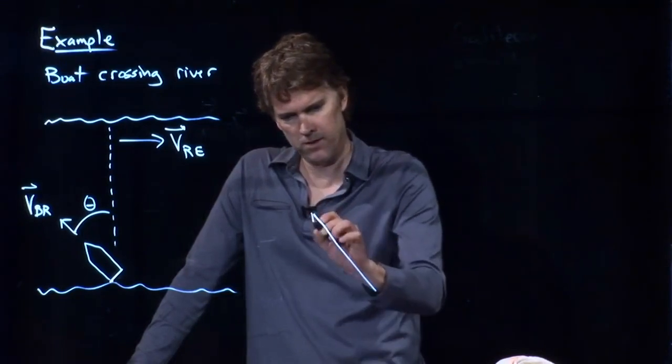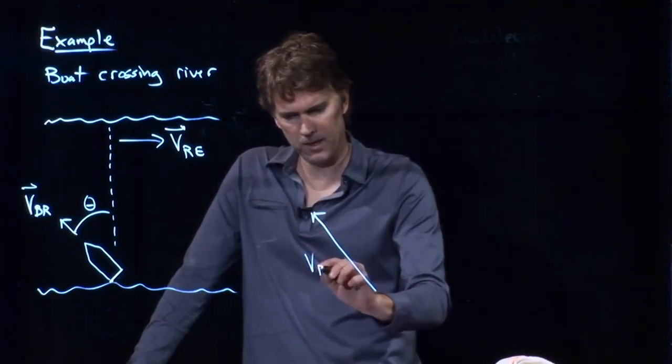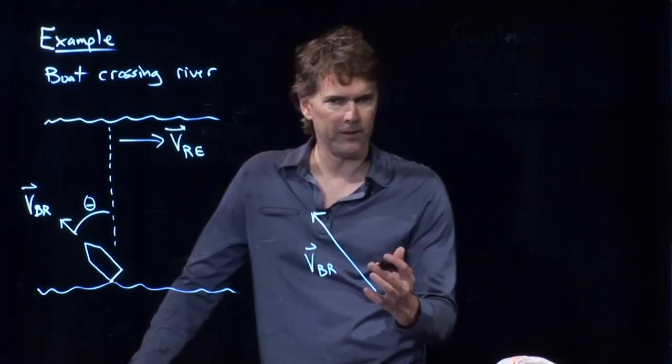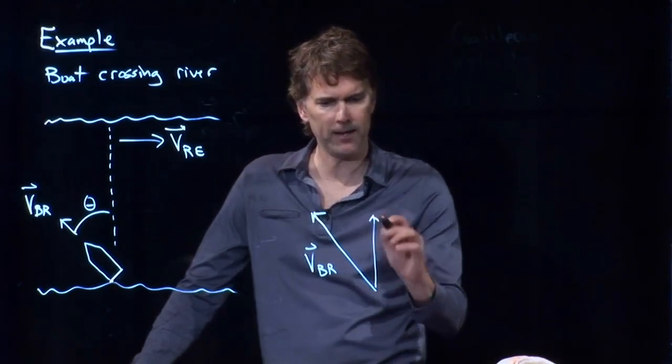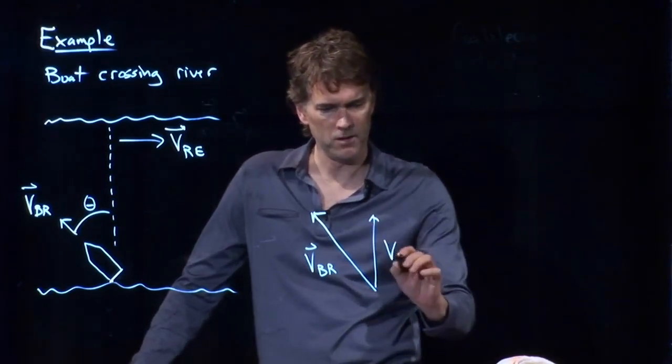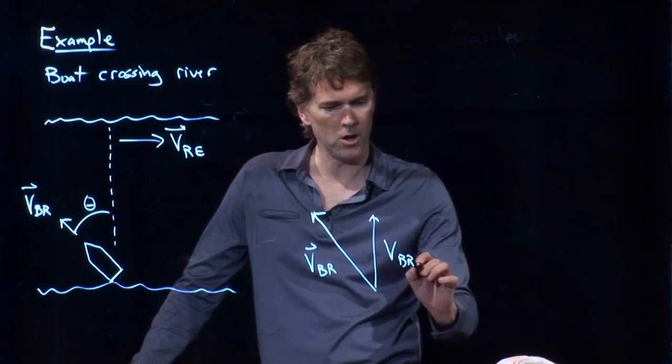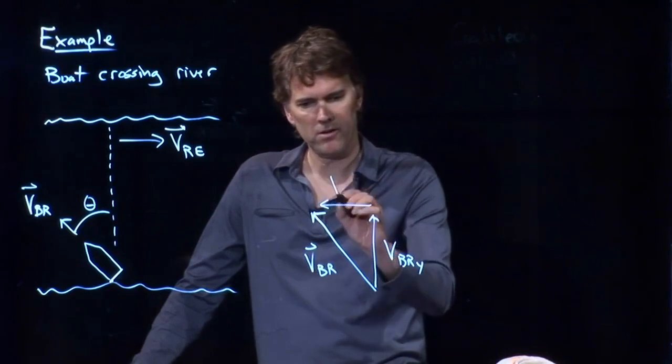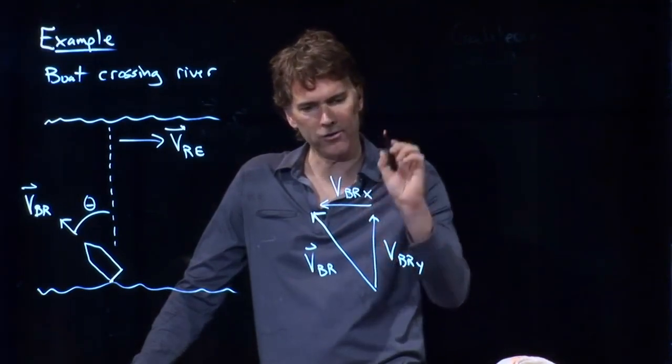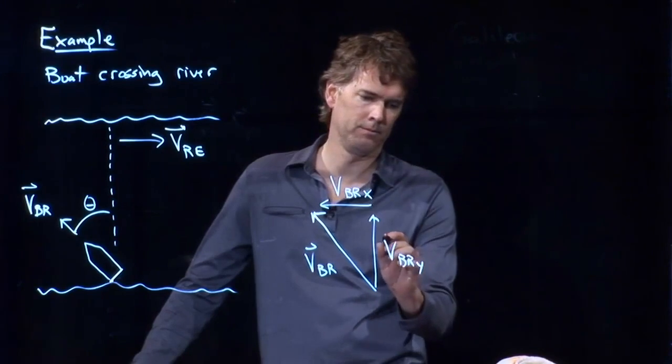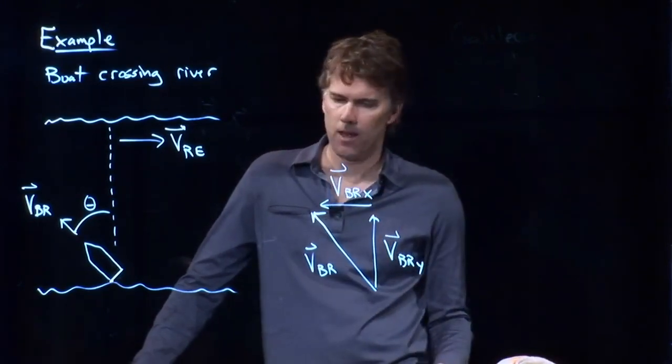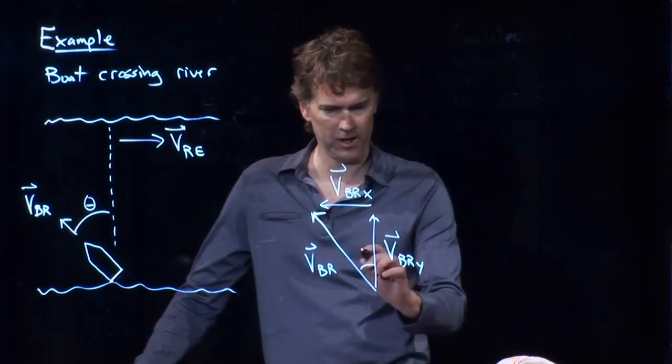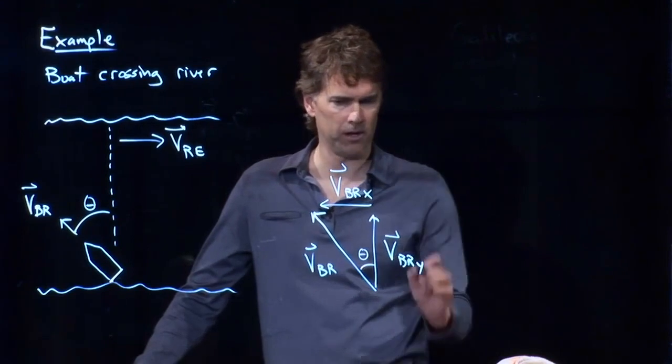VBR is pointing out like that, which means there's two components to it, right? There is some component in that direction, VBR, we'll call it Y. And there is some component in that direction, VBR X. This one is, of course, the sine component, if this is theta. This one is the cosine component.